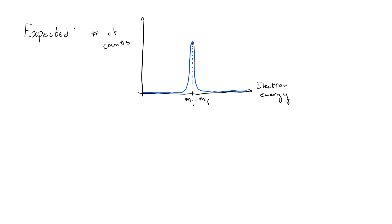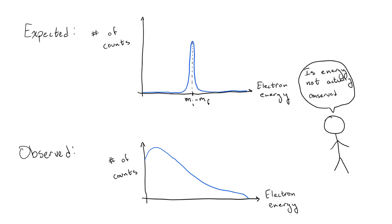However, the results were shocking. Instead of seeing the expected sharp peak in the electron energies, a smooth, broad curve was actually detected. So, what the heck is going on? Is conservation of energy completely broken? This isn't even the end of the problems.